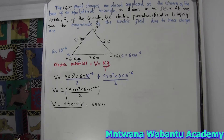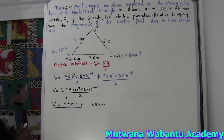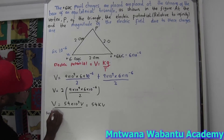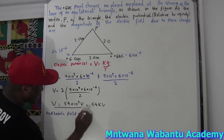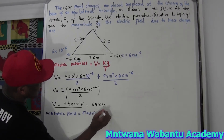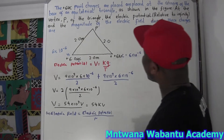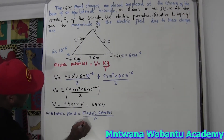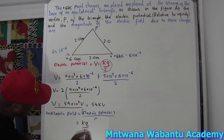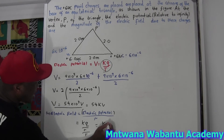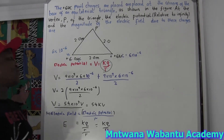Now for the second part: find the magnitude of the electric field. The formula for electric field is very easy. To get the electric field, take the electric potential divided by the radius — that's V/r. Since V = kQ/r, dividing again by r gives E = kQ/r².